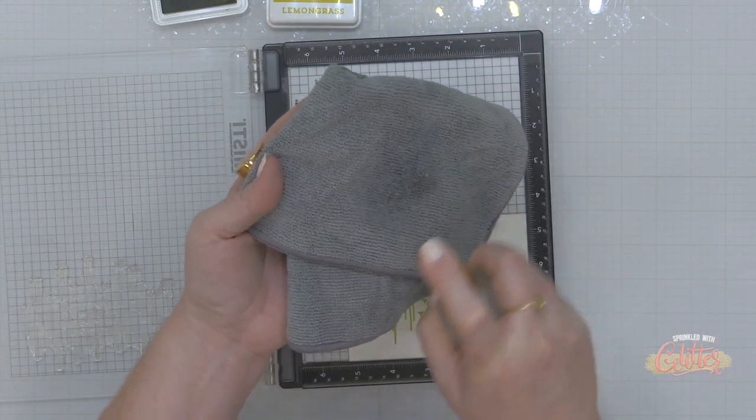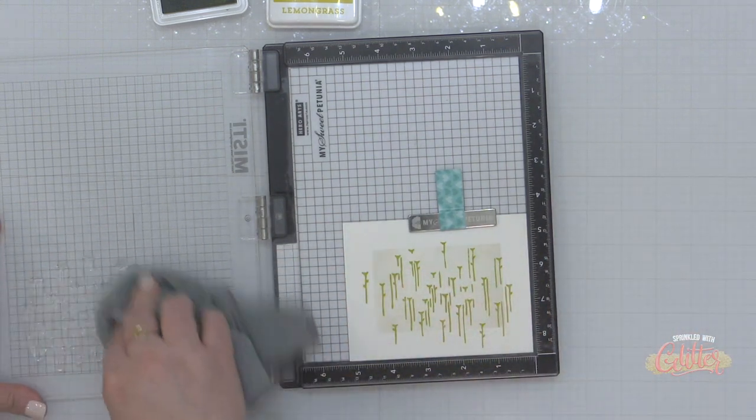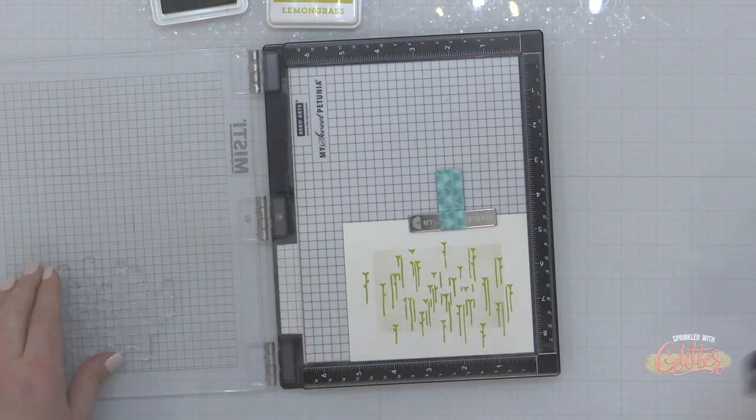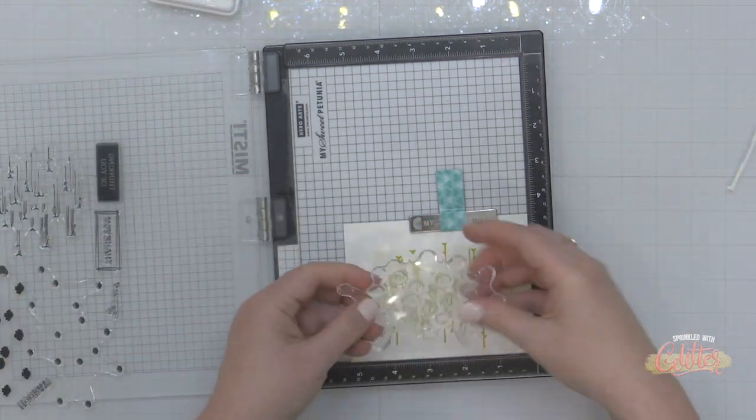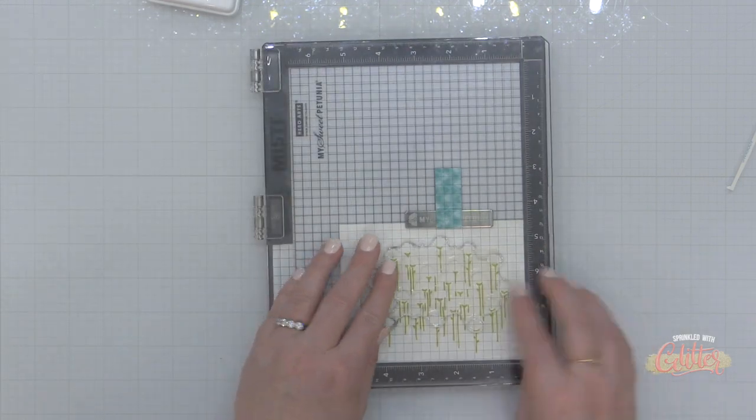Now I am actually cleaning as I go today, which is really unusual. And I'm using just a little bit of stamp cleaner, which I keep in that really pretty gold topped bottle with a microfiber cloth to clean up my stamps before I put them back on the backer.